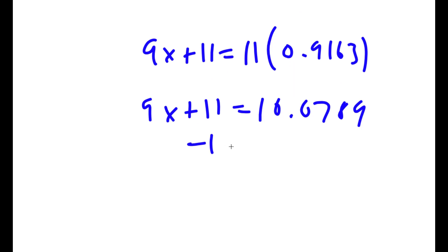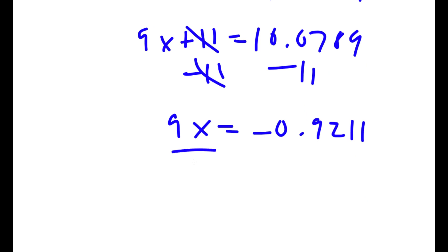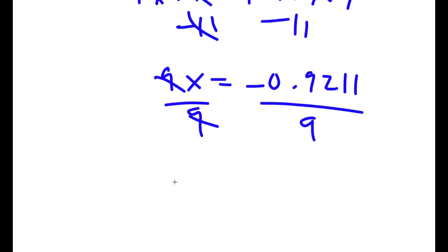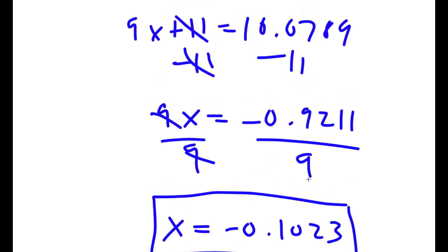Now I'm going to subtract 11 on both sides, so I get 9x is equal to negative 0.9211. If I divide both sides by 9, I get x is equal to negative 0.1023. So this is my answer to this problem.